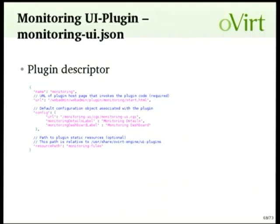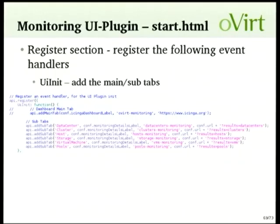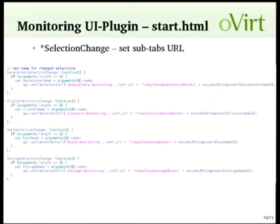For the actual code, `api.addSubTab` is used to add sub-tabs for data centers, clusters, hosts, storage domains, and so on. A GET variable is sent to the CGI scripts so they know what type of resource should be displayed. If you select another data center or another host, it's handled with the data center selection change event, for example, which passes the name of the new data center to the CGIs.